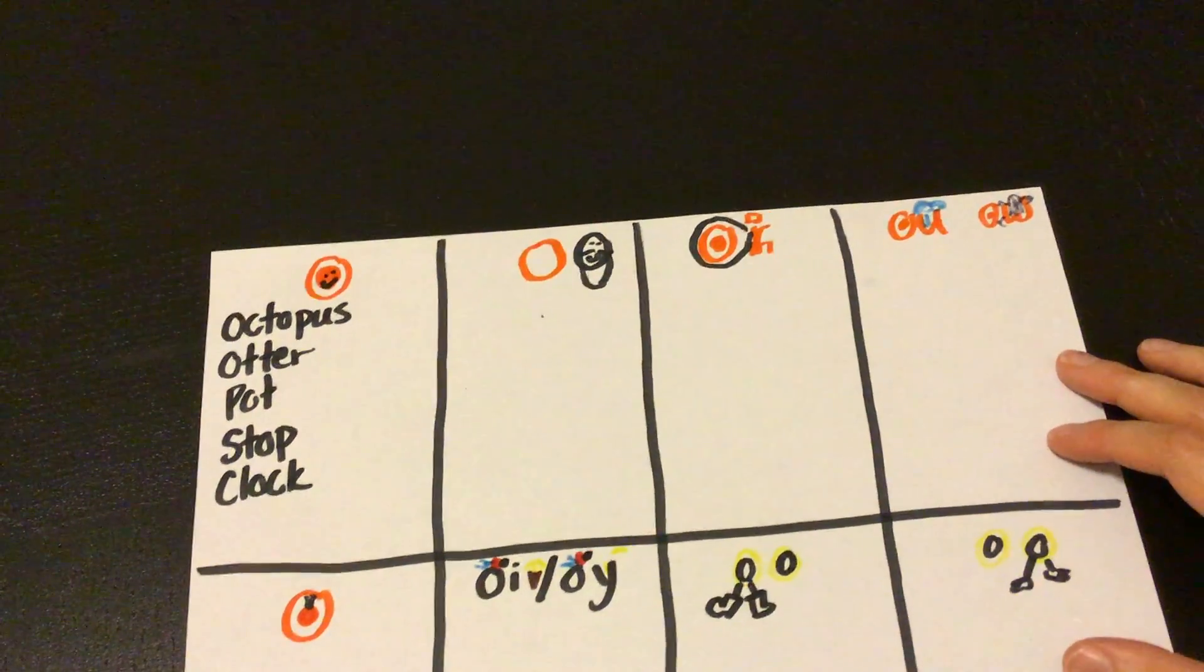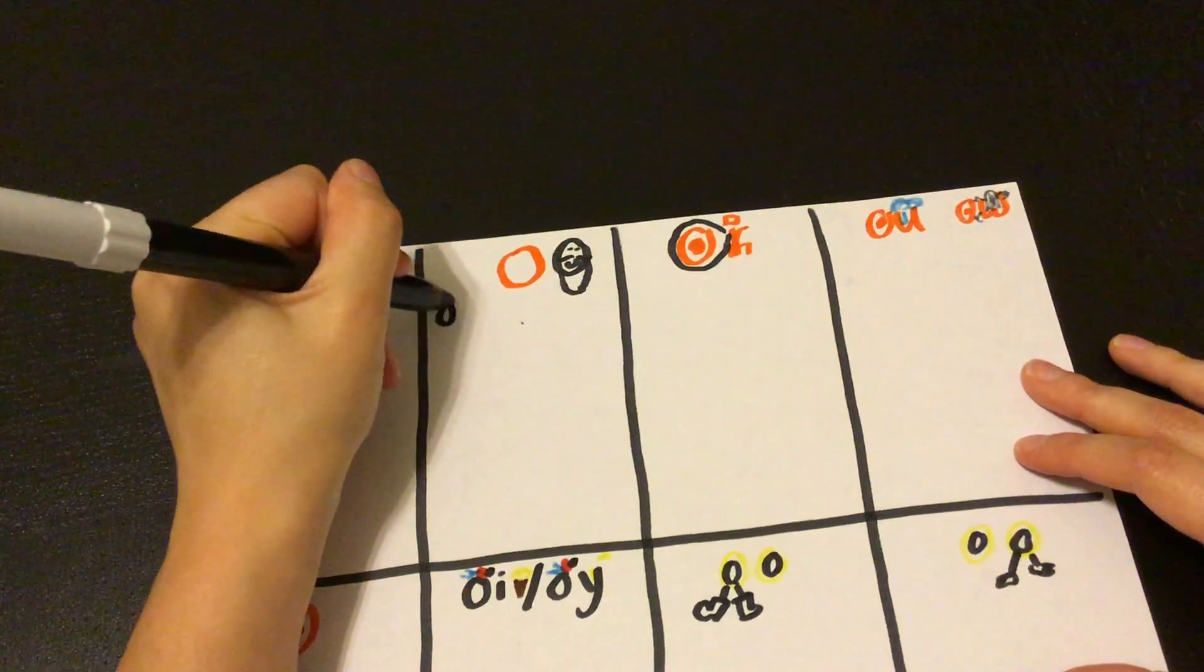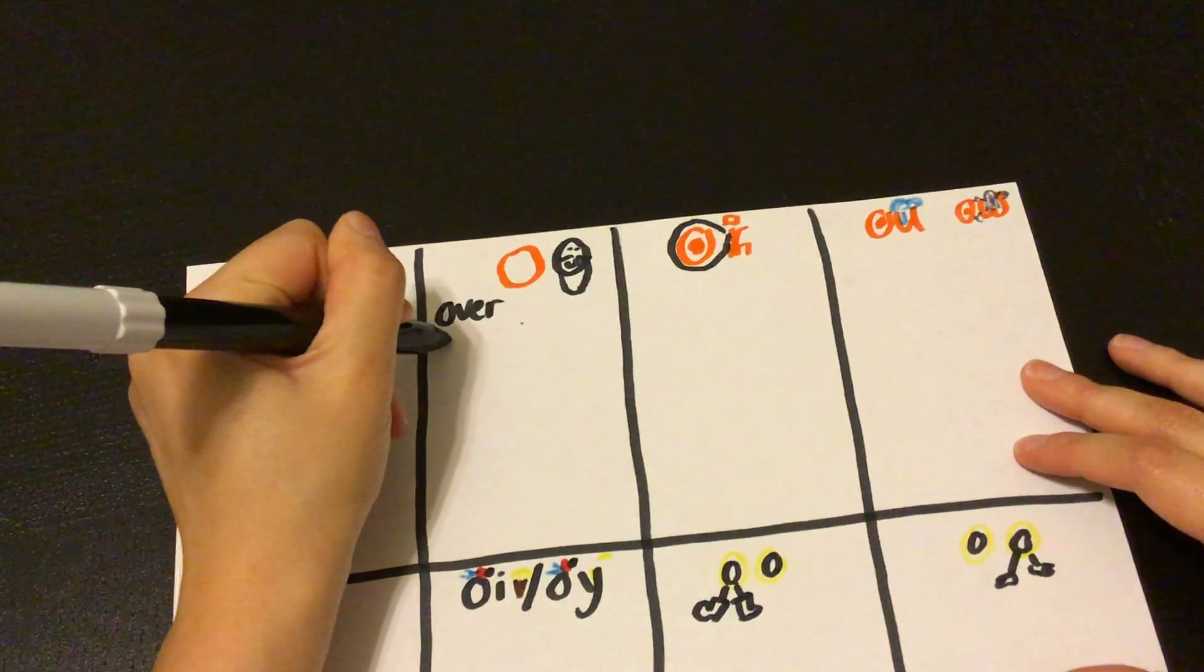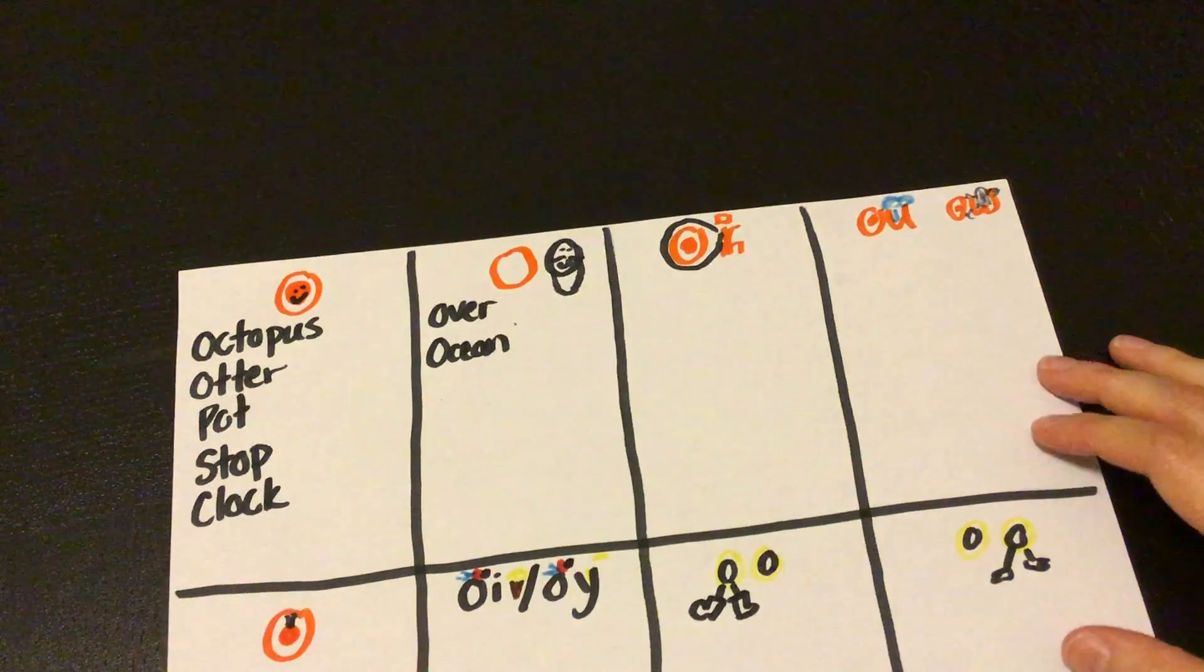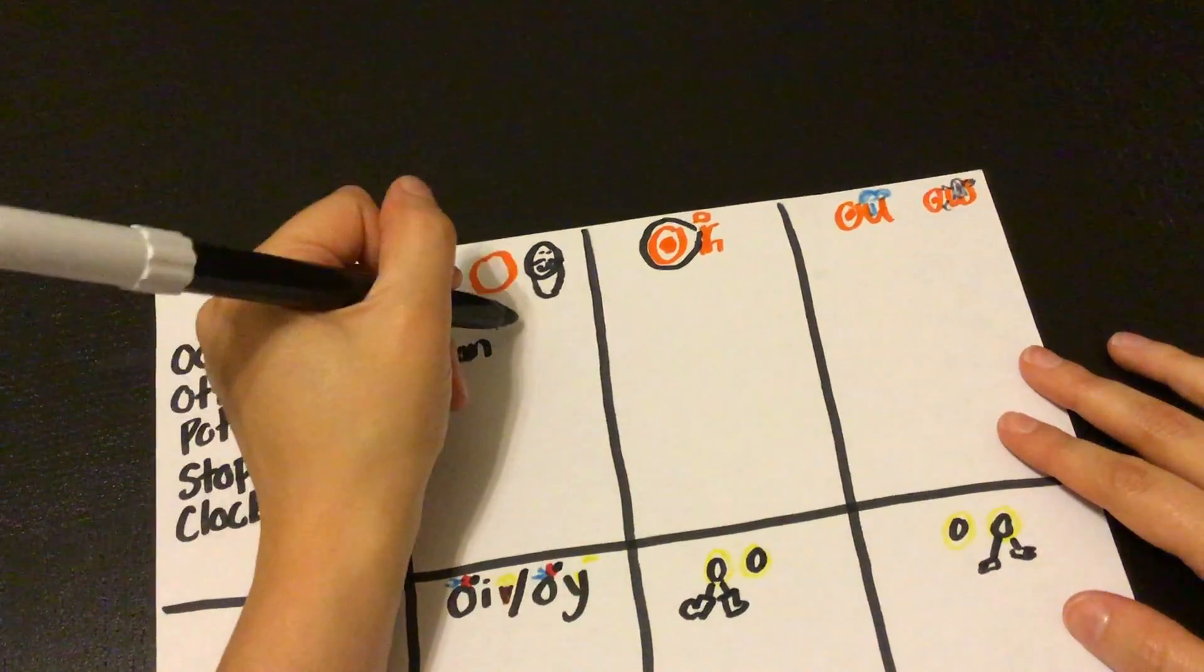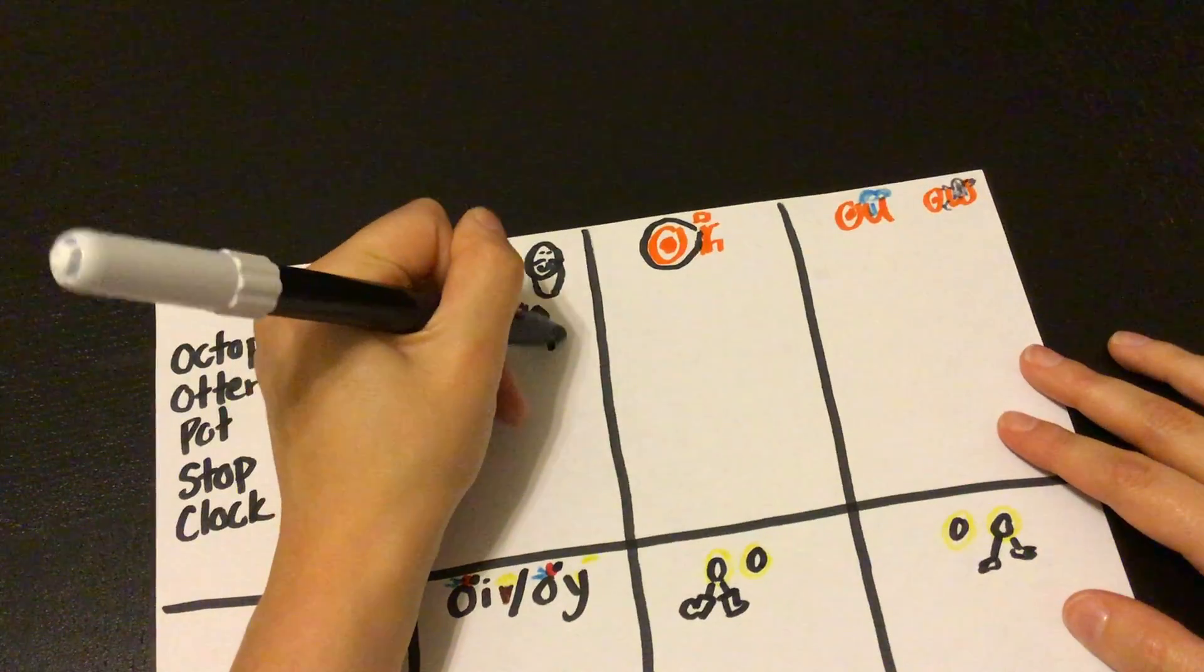Mr. O, we know he can start words like over or ocean, but he also can come at the end of words, right? Like go or no.